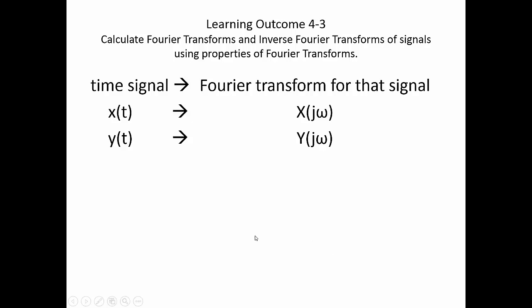This is based on the idea that if you have a time signal called x of t, it has a Fourier transform called x of j omega. If we have a time signal called y of t, we have a Fourier transform called y of j omega.